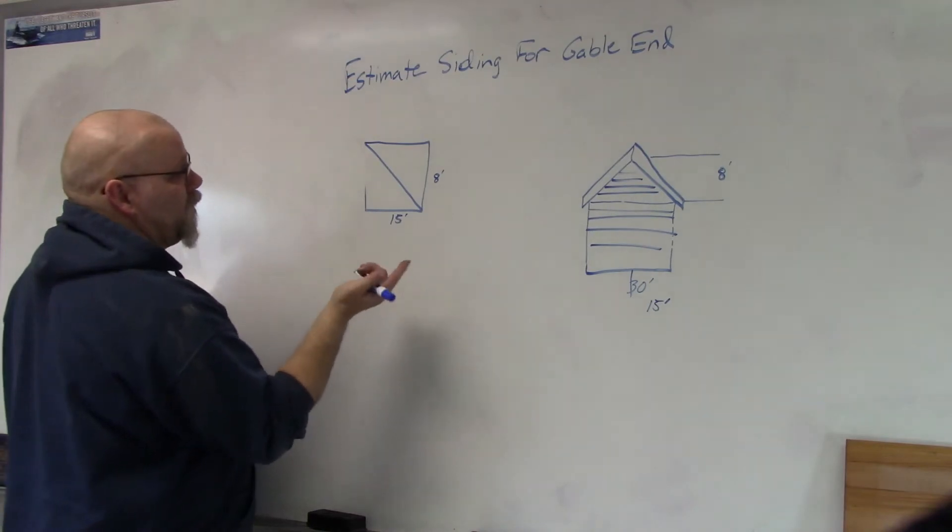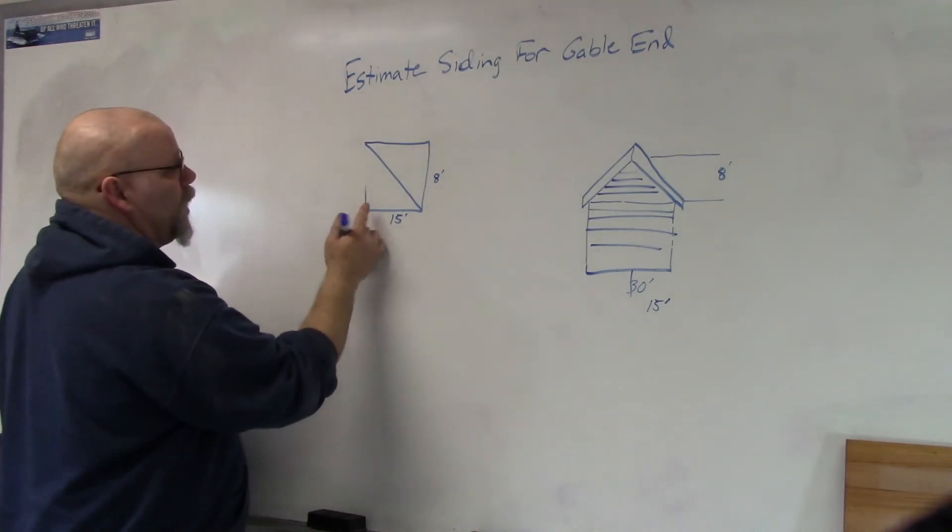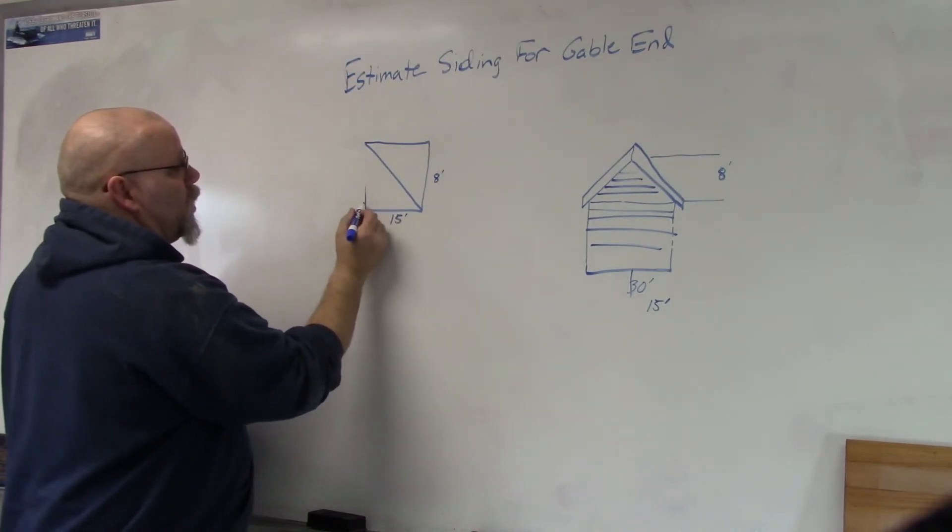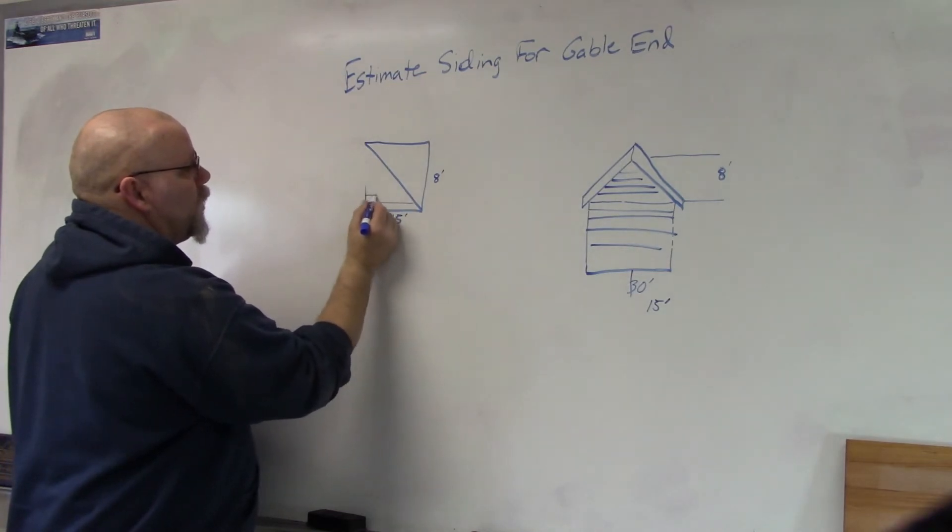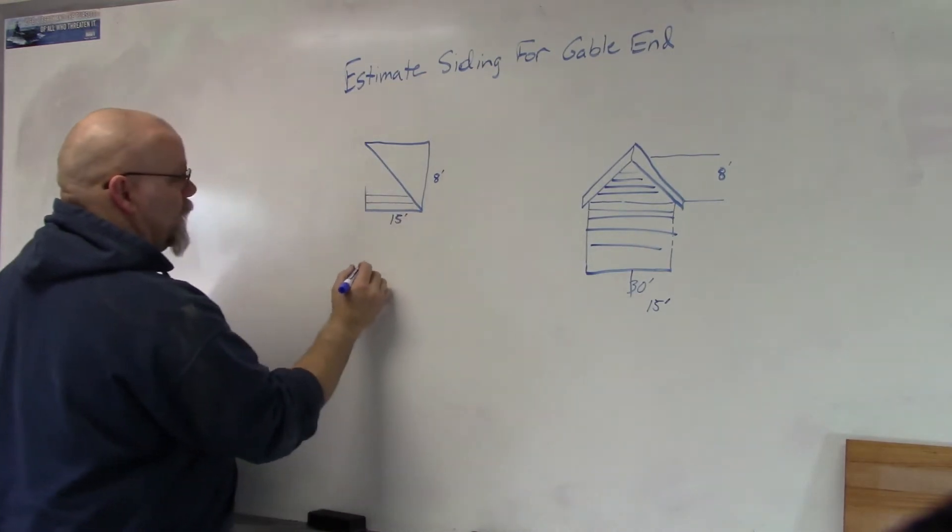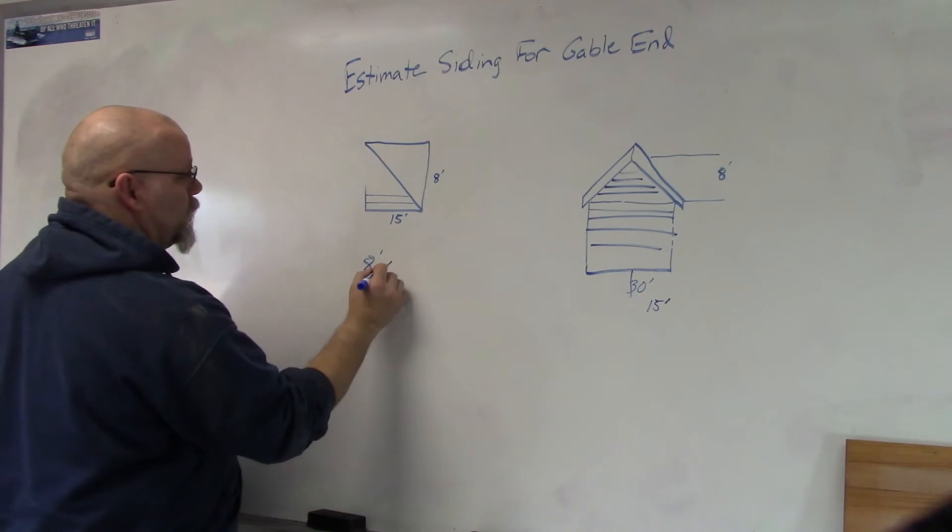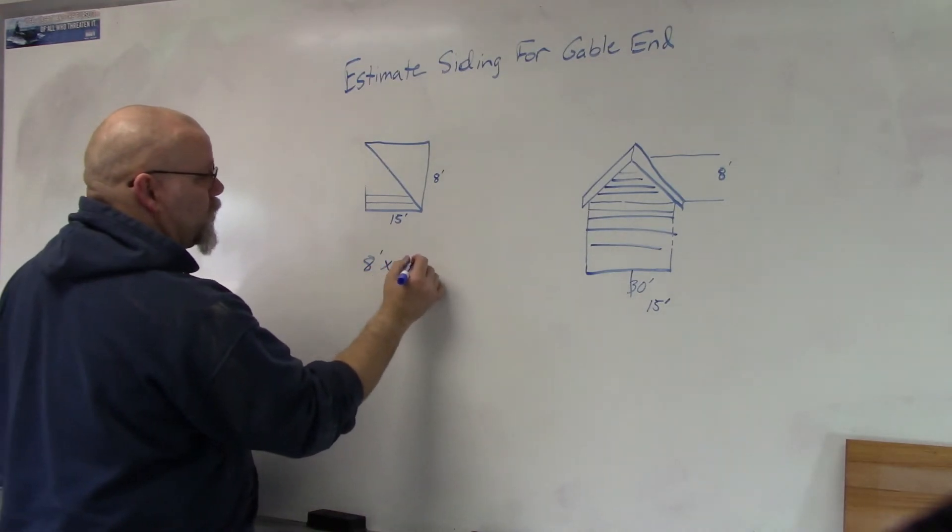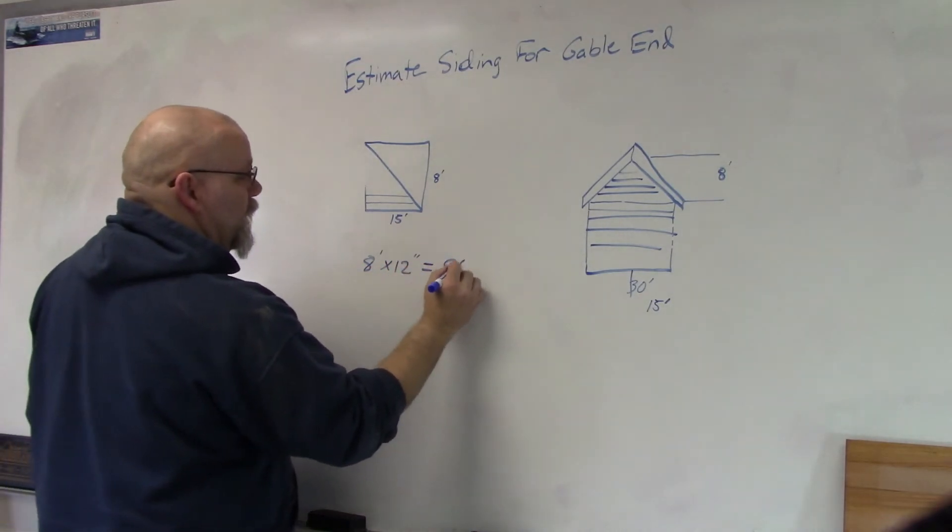Okay, so if you watch my previous video on estimating siding, there's two ways to do it: you can do the area method or you can do the row method. So the row method would be taking 8 feet, multiplying times 12 inches, gives you 96 inches.